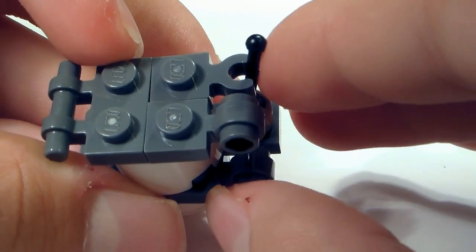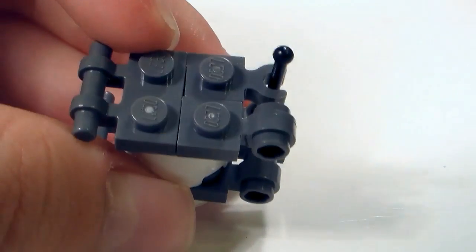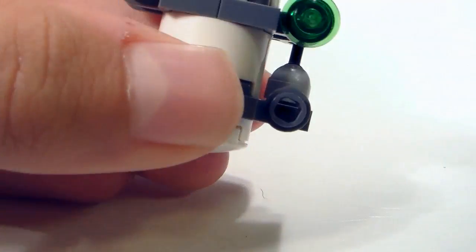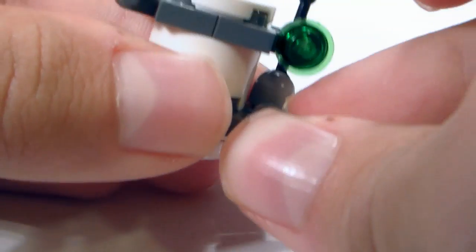And then you can put the lever in there if you want. And then you're gonna use the 2x2 rounded tile. And then put on the two studs. That will switch back and forth if you have played the video games.